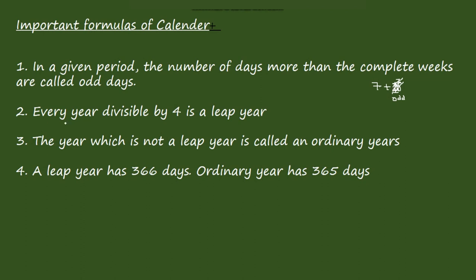Every year divisible by 4 is a leap year. Consider 2004: if divisible by 4 — 2004 divided by 4 is 501 with remainder 0 — so 2004 is a leap year. The year which is not a leap year is called an ordinary year. If it is not divisible by 4, it is an ordinary year. For example 2010 divided by 4 gives remainder 2, so 2010 is not a leap year — it is an ordinary year.